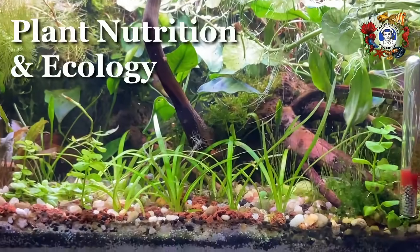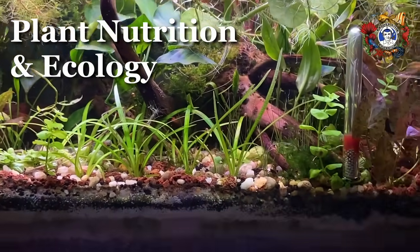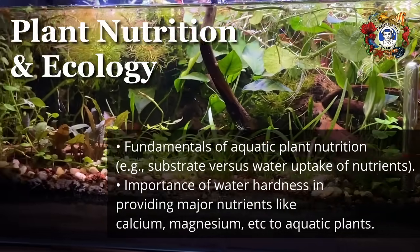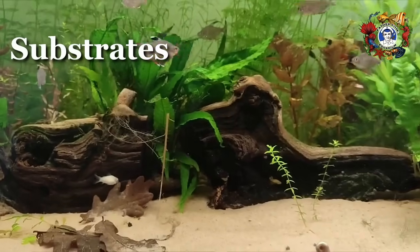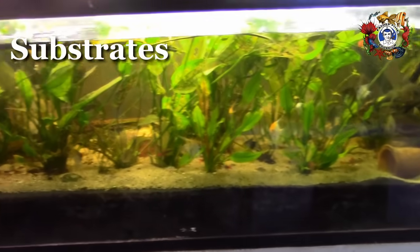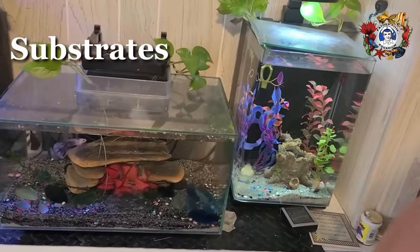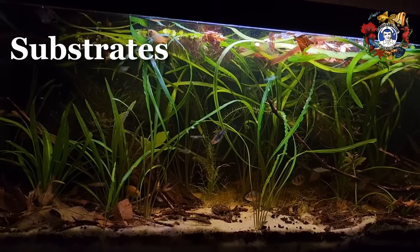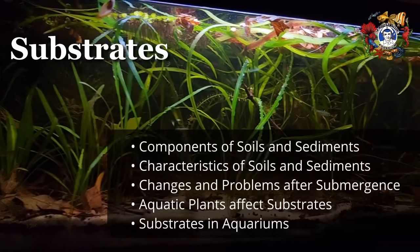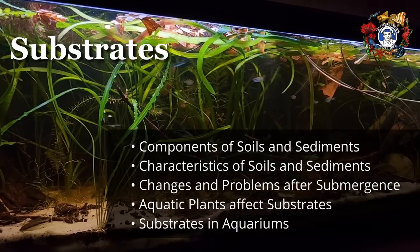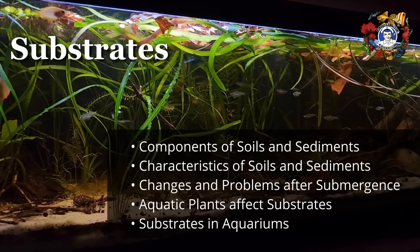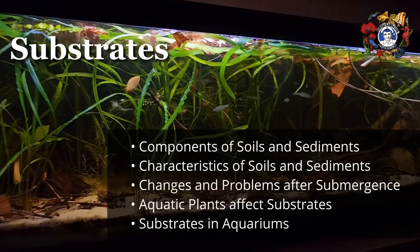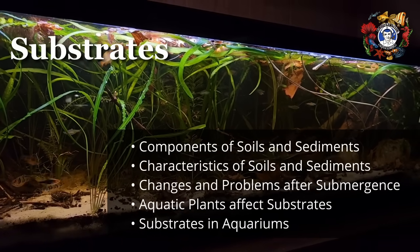Section seven: plant nutrition and ecology. Chapter seven describes the fundamentals of aquatic plant nutrition. Number eight: substrates. Most hobbyists do not have soil substrates in their aquariums, which may be the main reason they have trouble growing plants. For a better understanding of this critical topic, chapter eight discusses the general nature of soils before delving into the even greater complexities of submerged soils. Finally, it describes how hobbyists can use soils in the aquarium effectively.